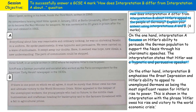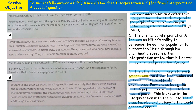As I said in my top tips, you also need to cover the other interpretation. On the other hand, interpretation B emphasizes the Great Depression and Hitler's ability to appeal to unemployed Germans as being the most significant reason for Hitler's rise to power. We've backed this up with a quote from the interpretation: 'Hitler owes his rise and ultimate victory to the world economic crisis.' We're showing the marker we understand the main message by picking out a phrase that relates to that main message in the interpretation.